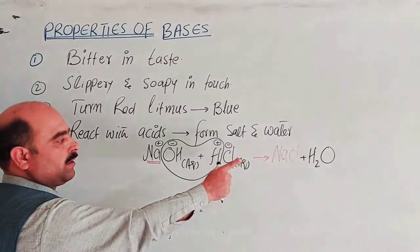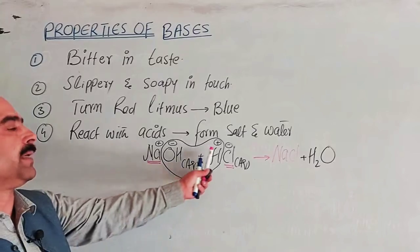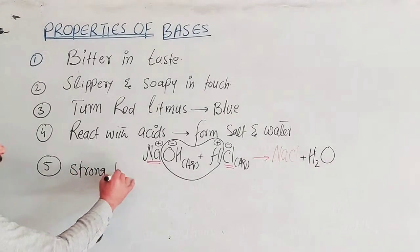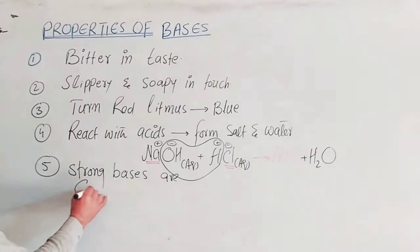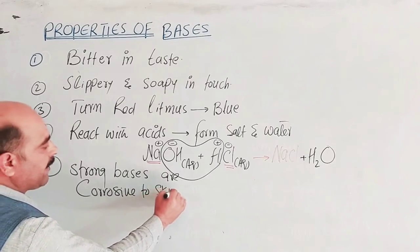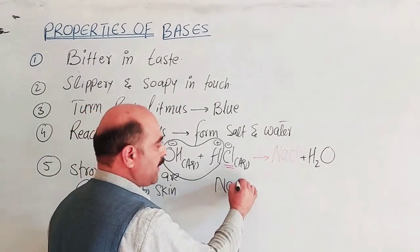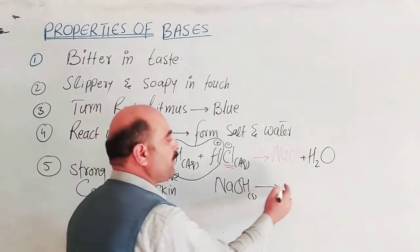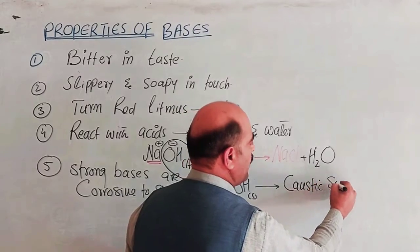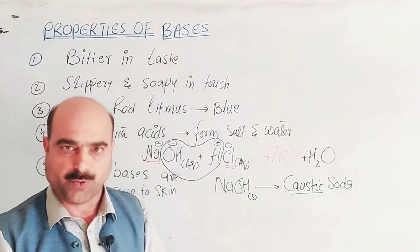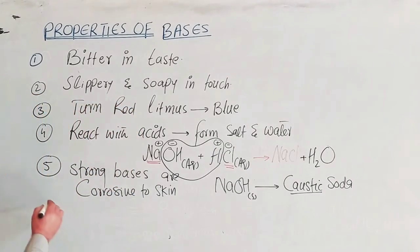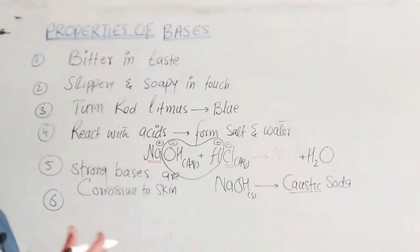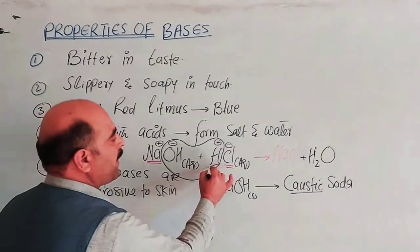Sodium hydroxide in solid state is slippery to touch and has a corrosive, dangerous action on the skin. It is also called caustic soda because of its caustic and corrosive nature. The sixth property is that bases are electrolytes.